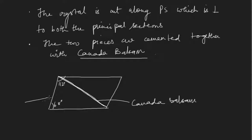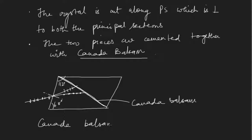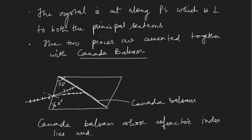When unpolarized light falls on the Nicol prism, due to double refraction it divides into two rays — the O-ray and the E-ray. The O-ray has vibrations perpendicular to the principal plane and the E-ray has vibrations parallel to the principal plane. Canada balsam is chosen because it is a transparent material whose refractive index lies between that of the O-ray and E-ray.